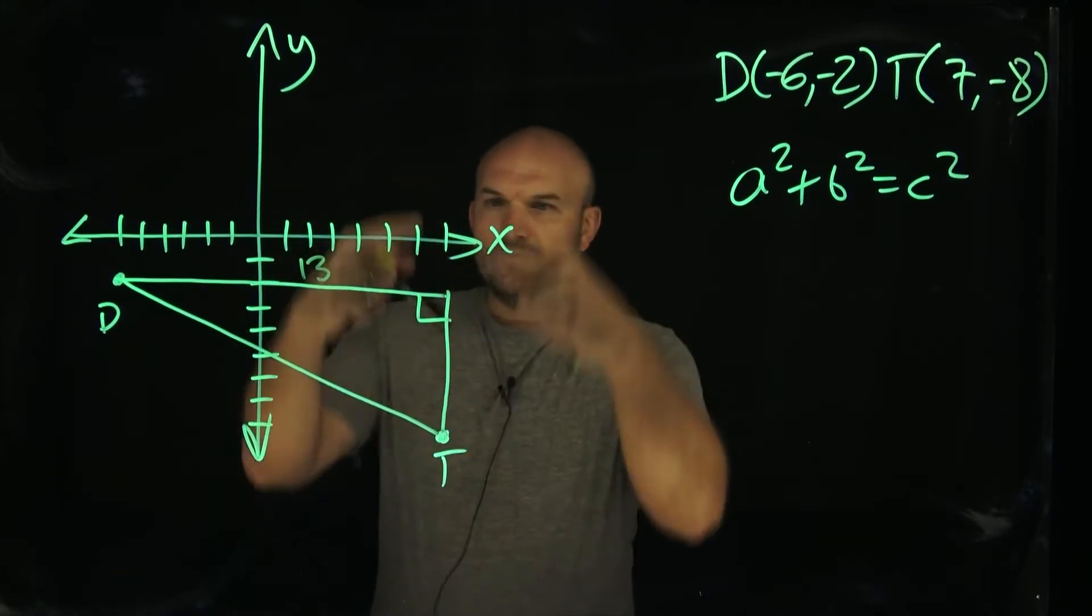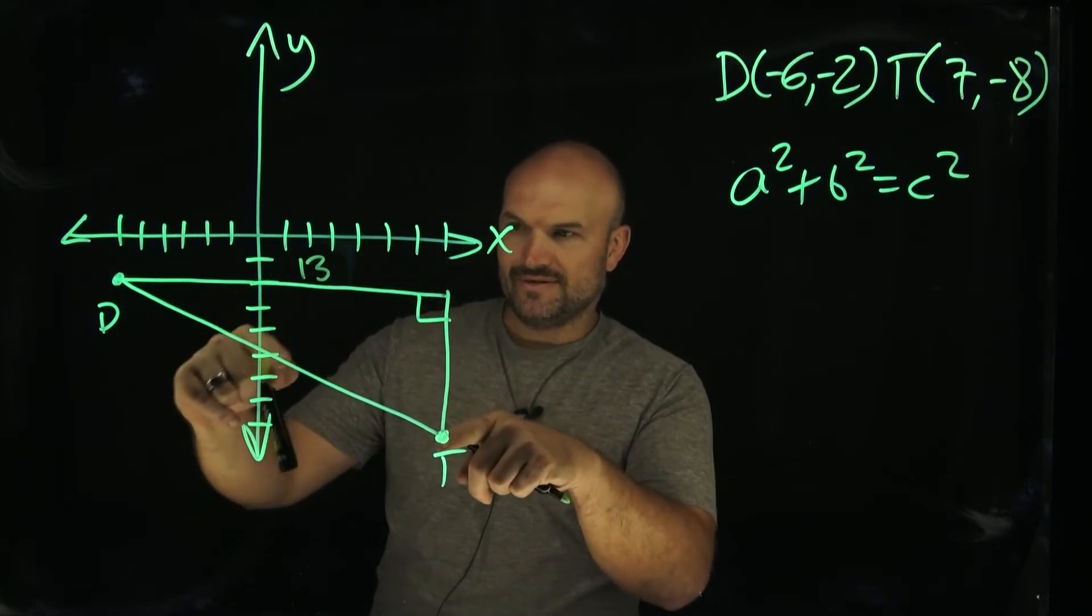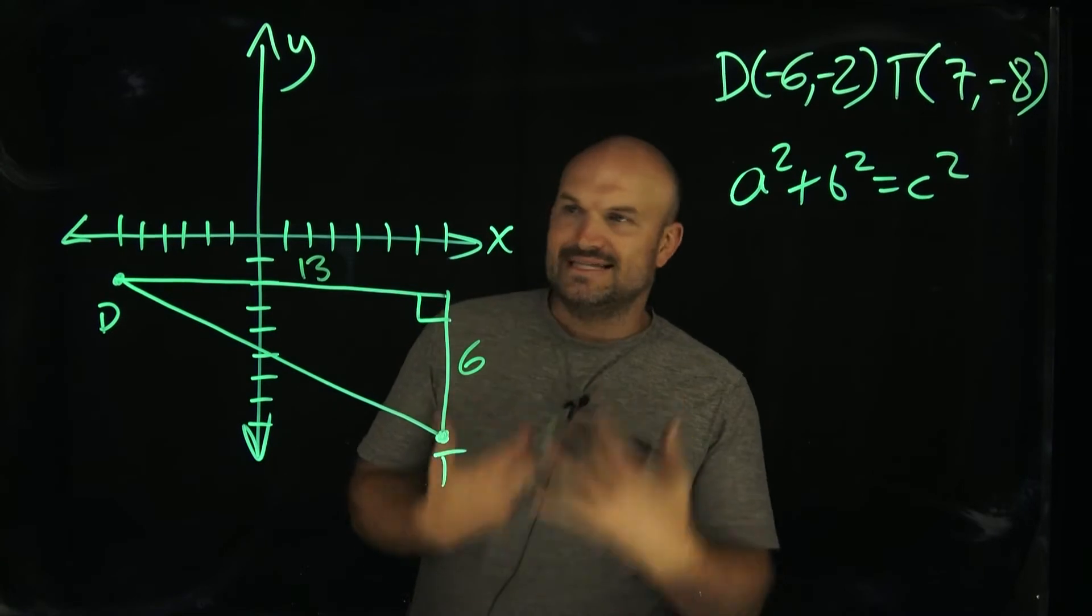And then over here, we're at negative two, and we went down to negative eight. So how far did we travel from negative two to negative eight? One, two, three, four, five, six. If you're going to look at things in a technical form,